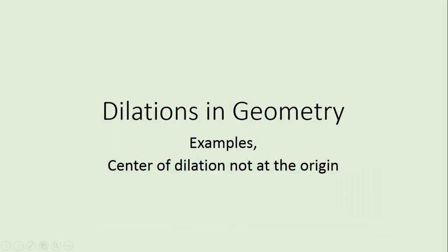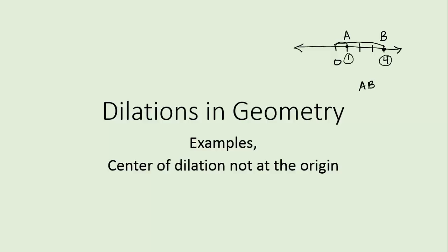Let's look at dilations when they are not centered at the origin. The major difference will be distance from the point of dilation — that is the center — and any vertex. If you consider a regular diagram of a number line and we put some points on the number line, when the center of dilation was at zero, zero, distances were measured between the vertex points and zero. But when the center is not at zero, zero, it's more like finding the distances between two points that are not zero.